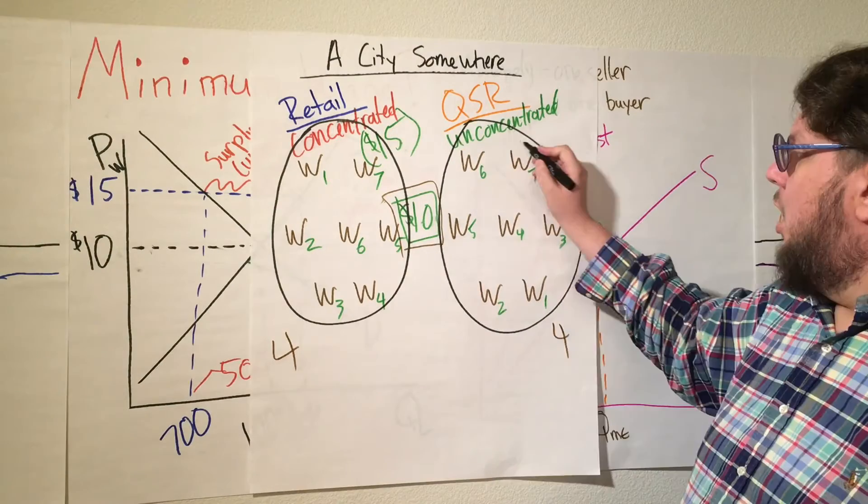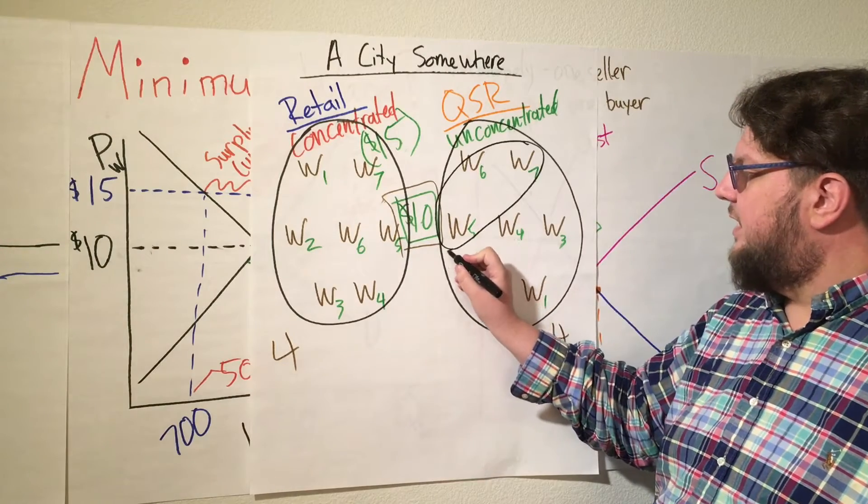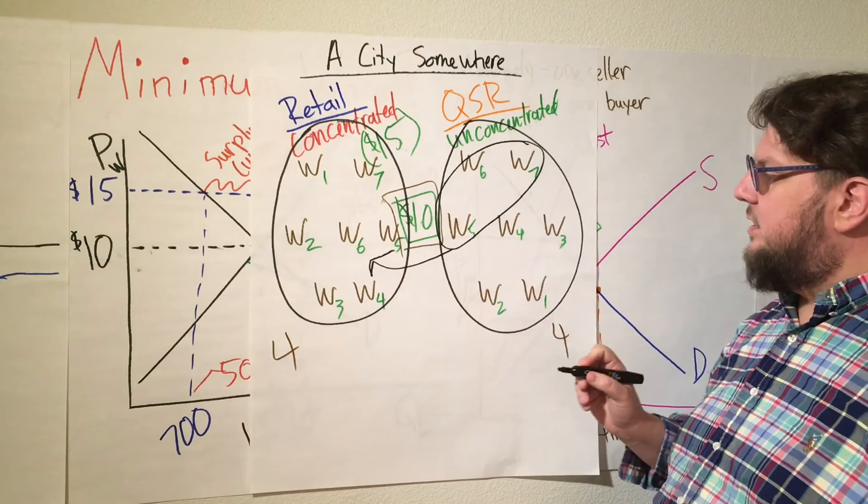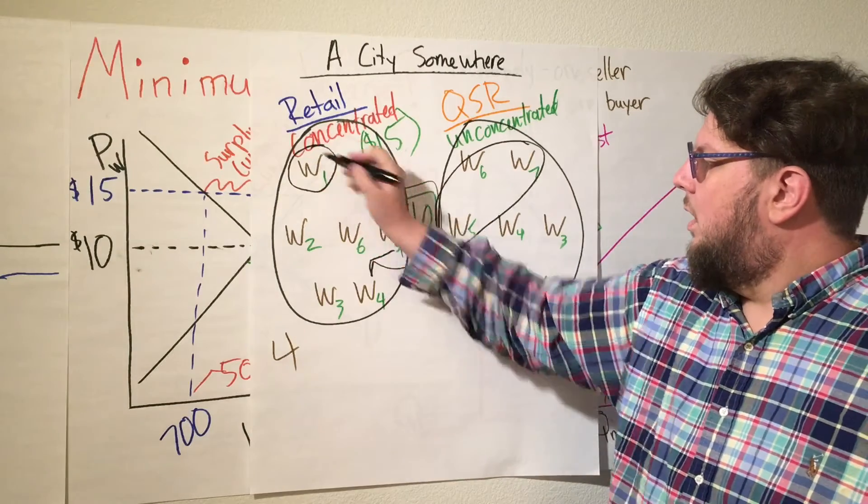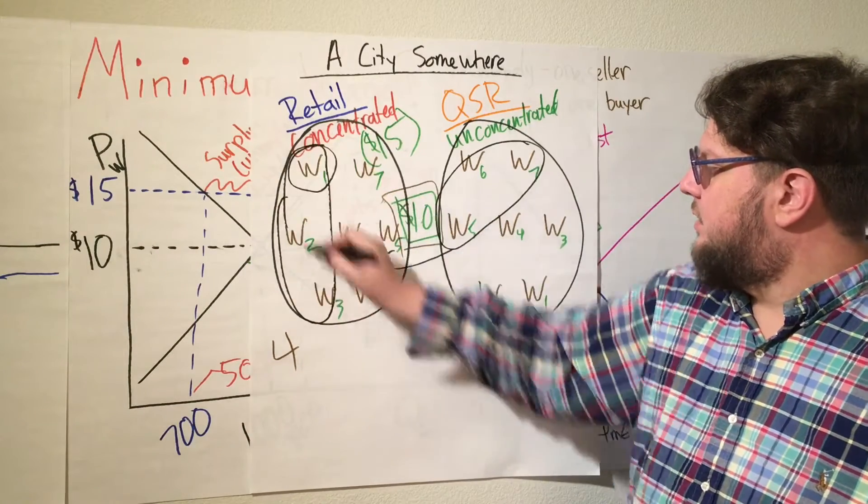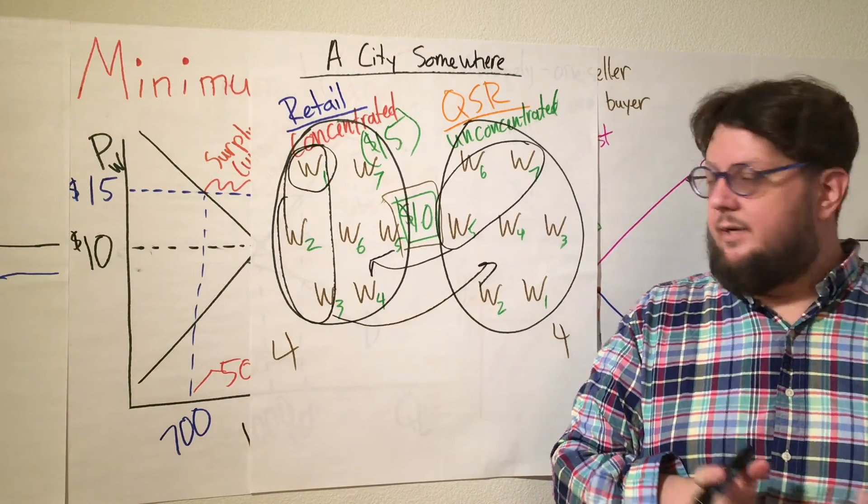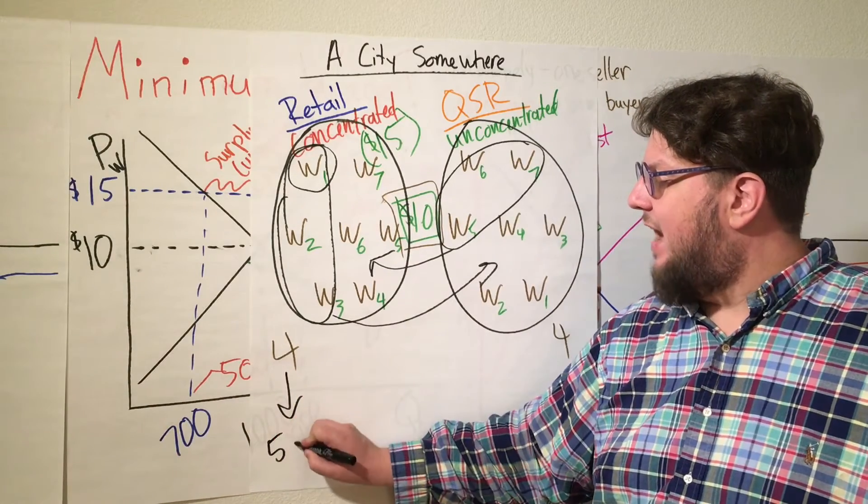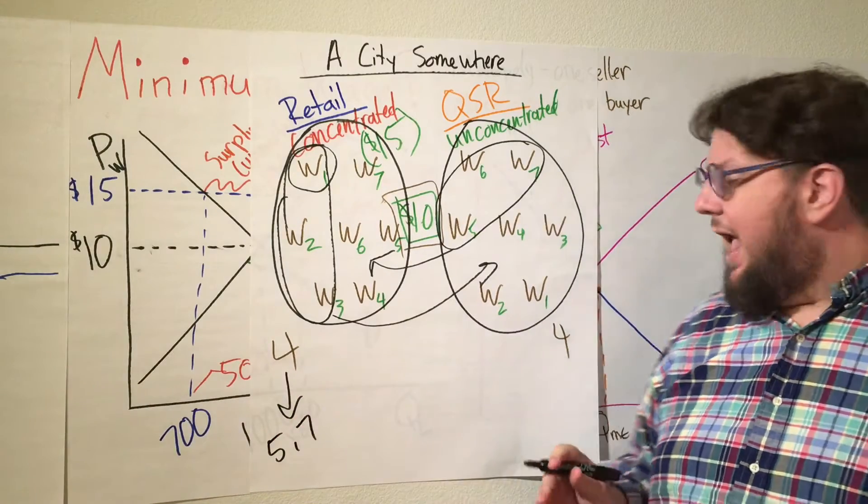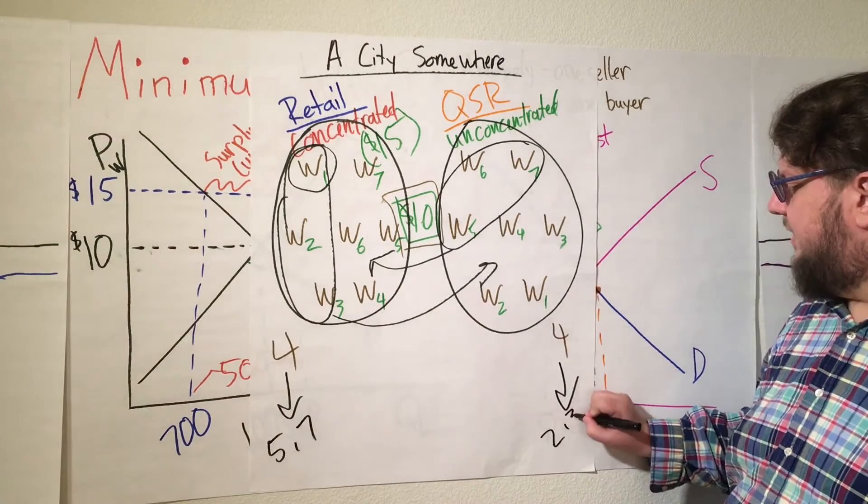Once we implement the $15 minimum wage, you're going to have this happen. Your higher quality workers in the fast food restaurants are going to come over here and work for higher wages while your lower quality retail workers, such as one, two, and three here, they're going to come over here and work for quick service restaurants. When you do that, you're going to replace this four average with about a 5.7 quality score and this average with about a 2.3 score.